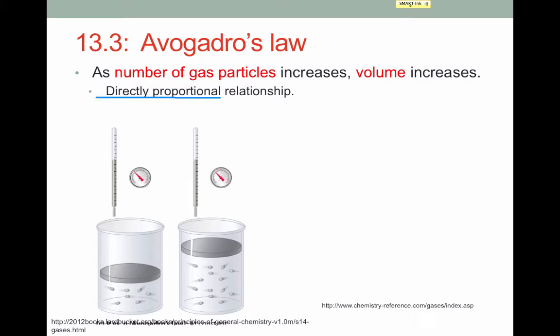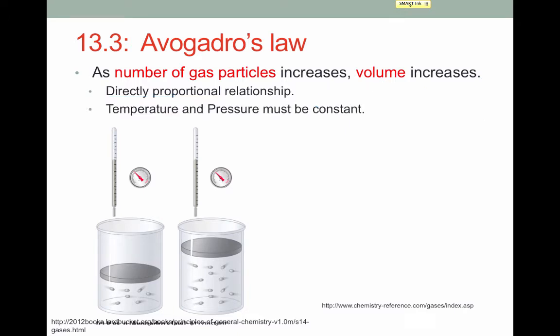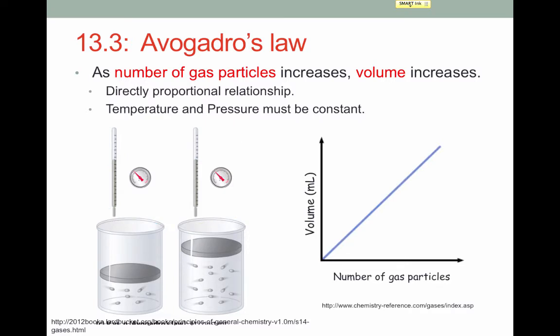This is a directly proportional relationship, meaning as the number of particles increases, the volume increases. It's important to note that for this relationship to hold, temperature and pressure must be constant. Both temperature and pressure are constant because our thermometers are measuring the same temperature and our pressure meters are measuring the same pressure. Looking at this graphically, we can again confirm it's a directly proportional relationship between volume and number of gas particles.